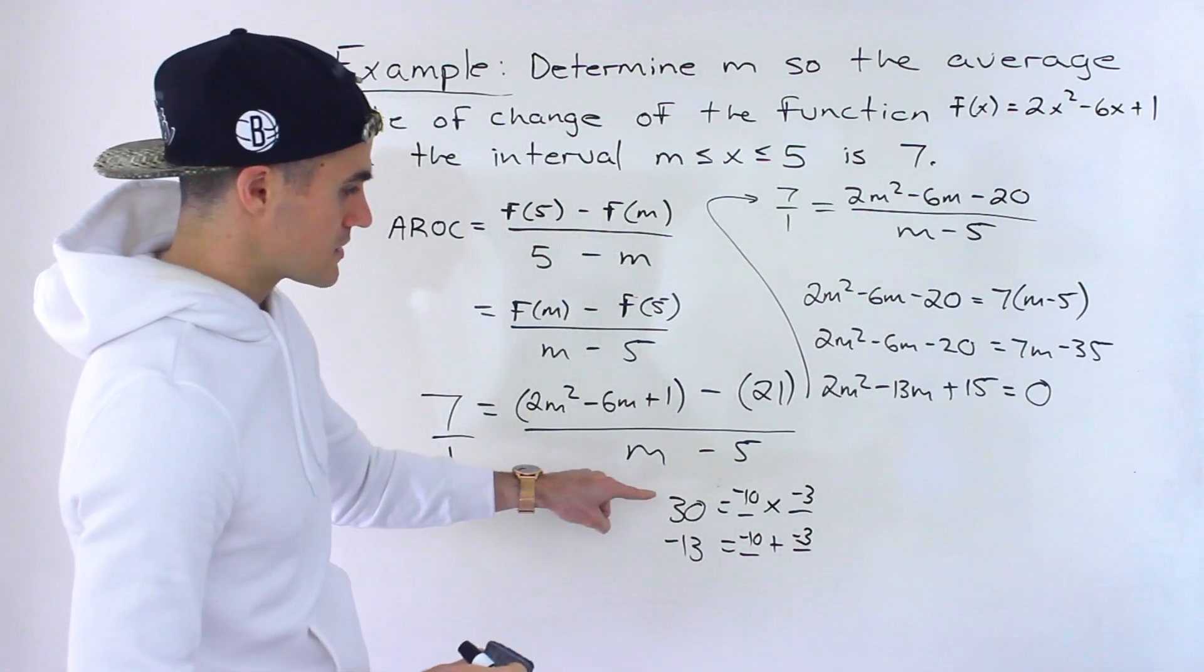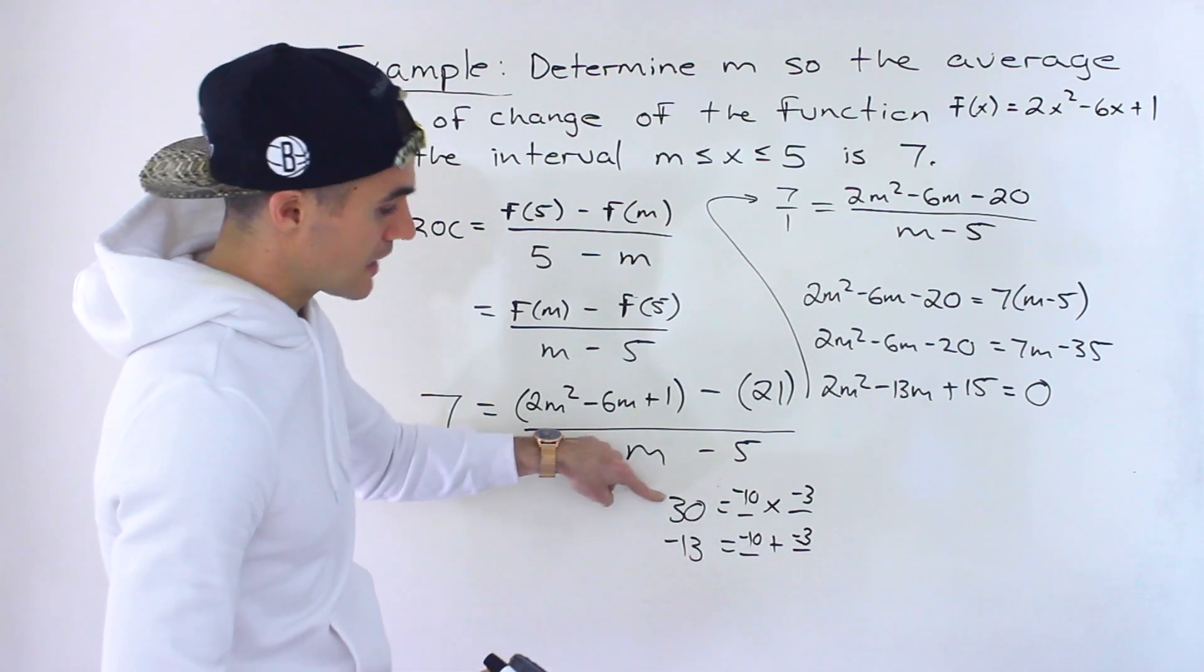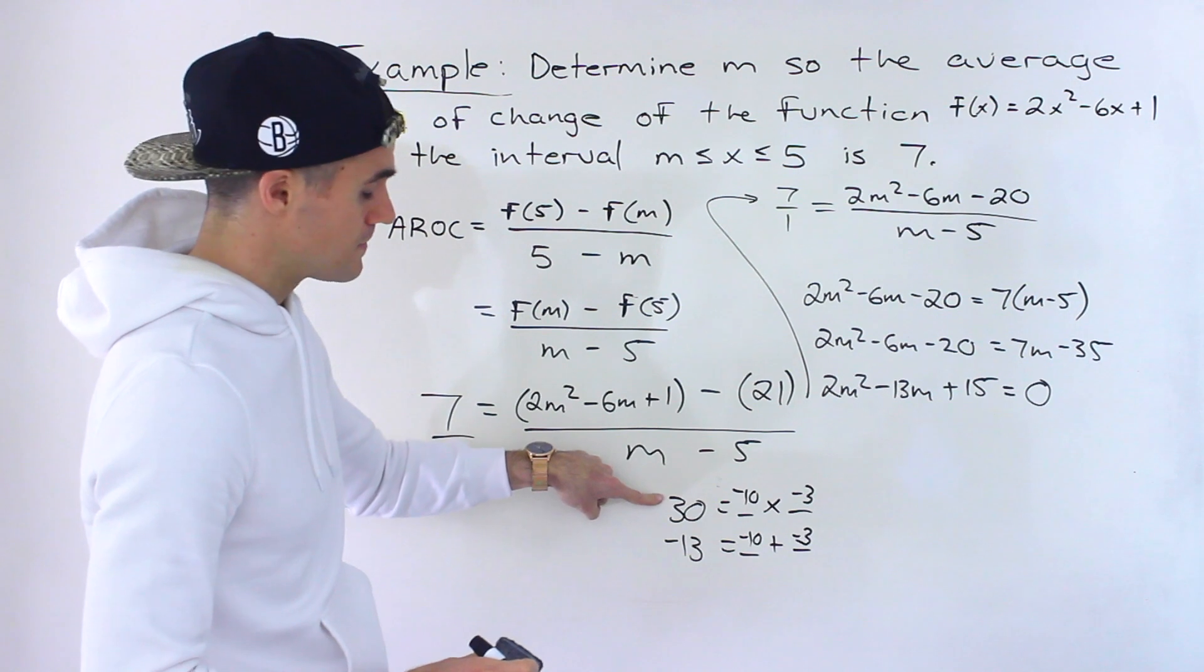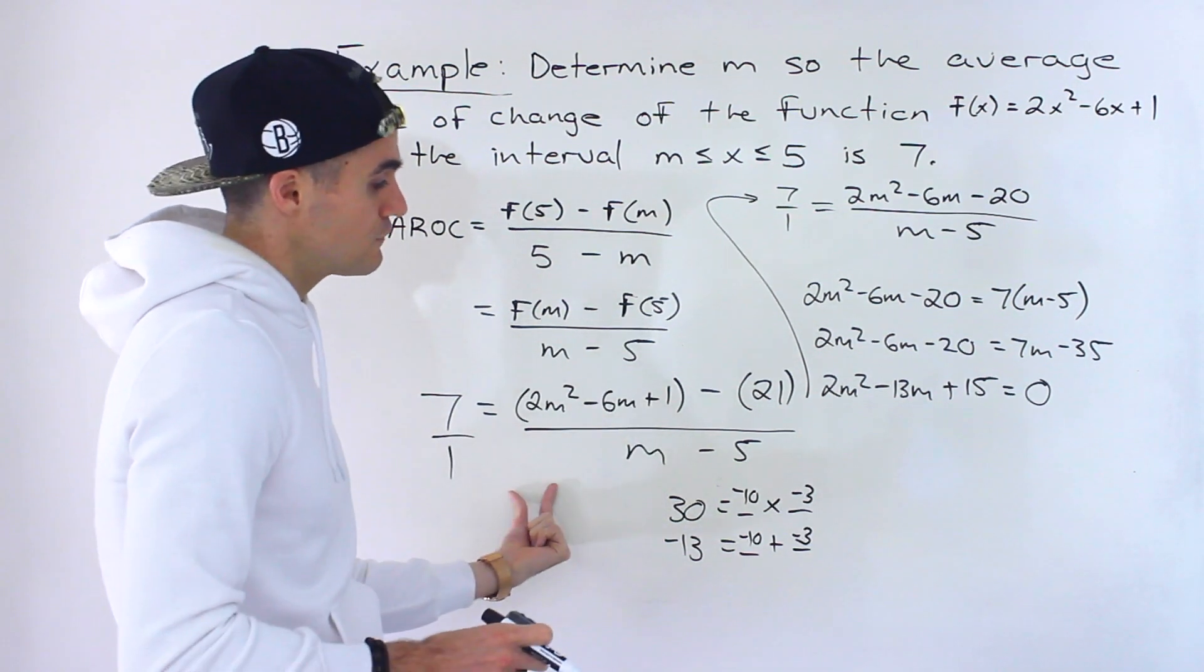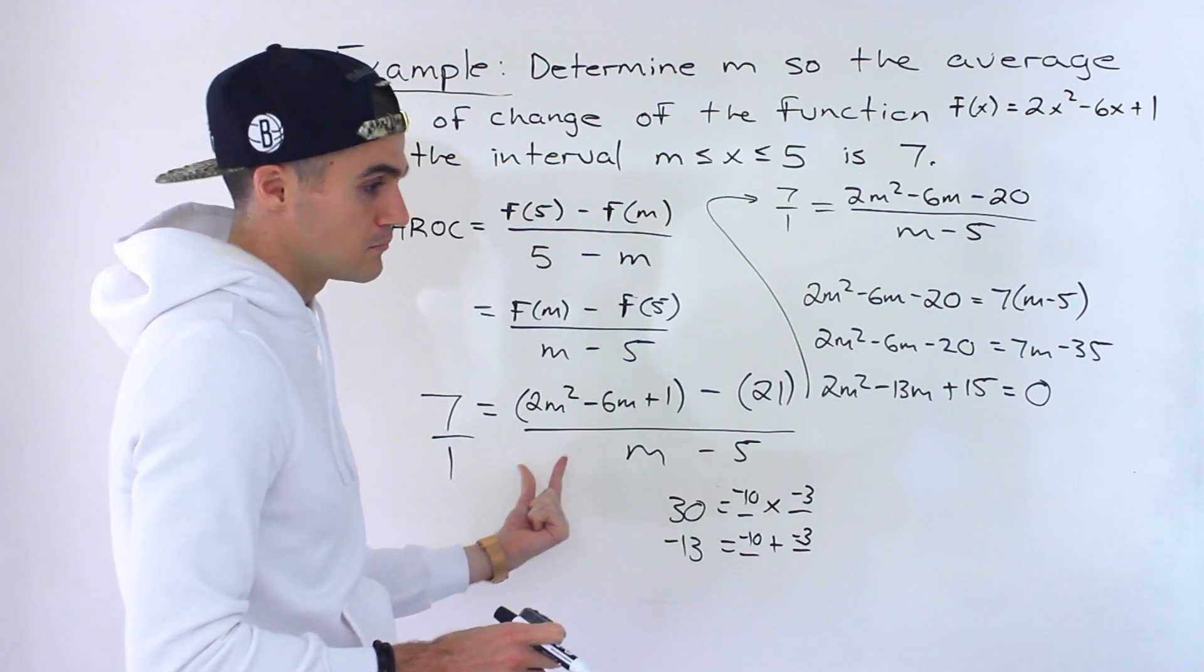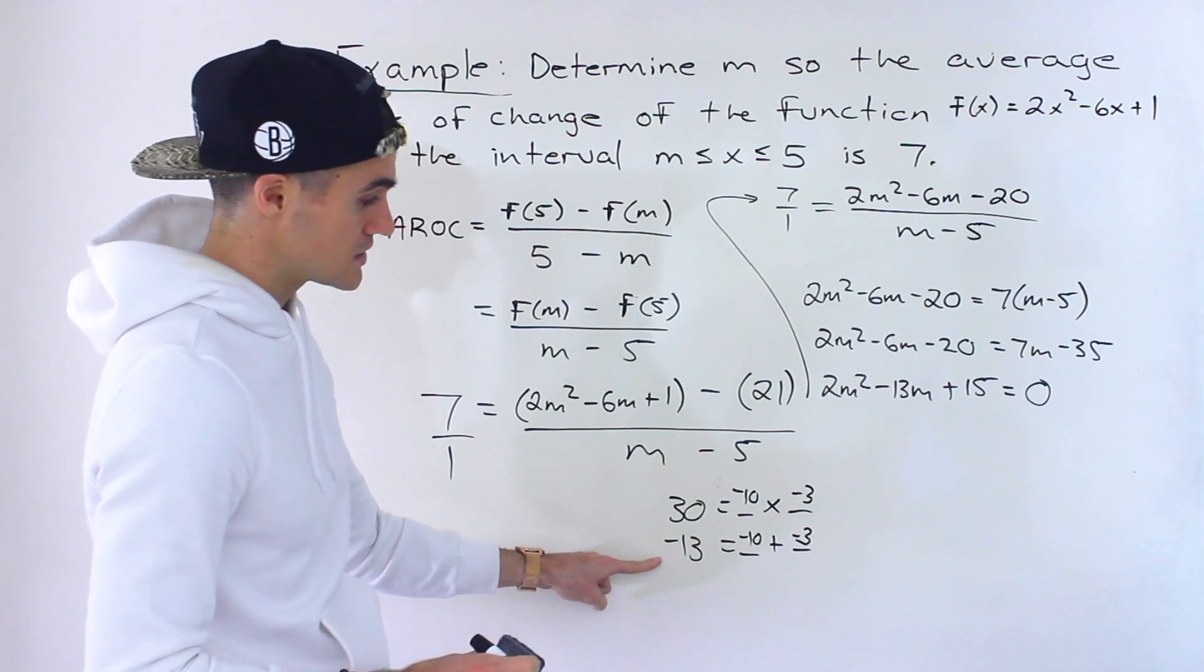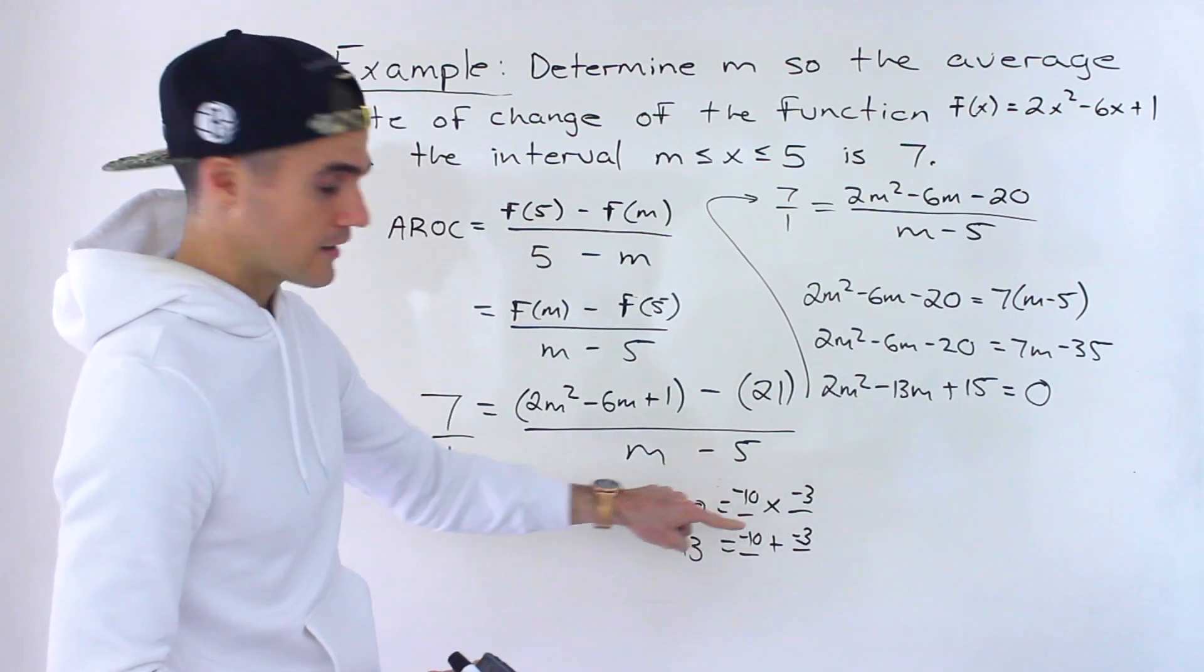Be careful here because I almost just made this mistake because 15 and 2, 15 times 2 gives us 30. But 15 plus 2 would give us 17. Or if we did negative 15 times negative 2, that would give us 30. But then negative 15 plus negative 2 would give us negative 17. So the two values are negative 10 and negative 3.